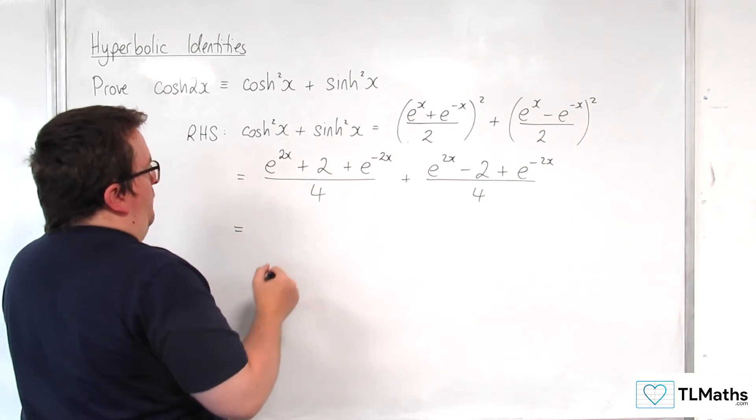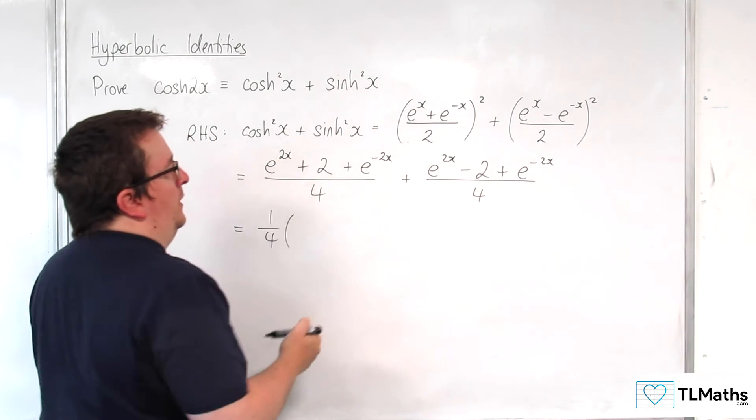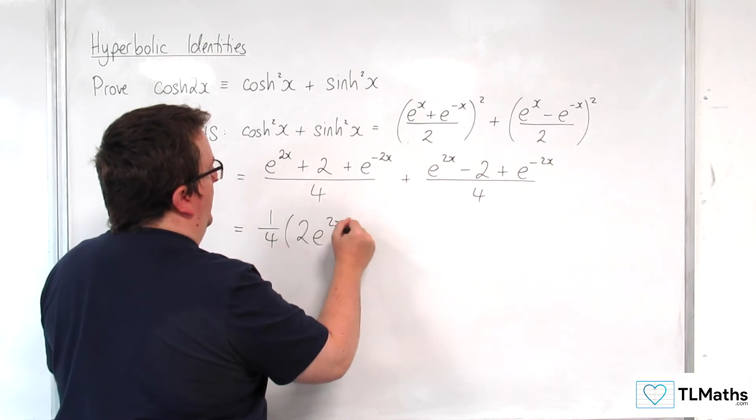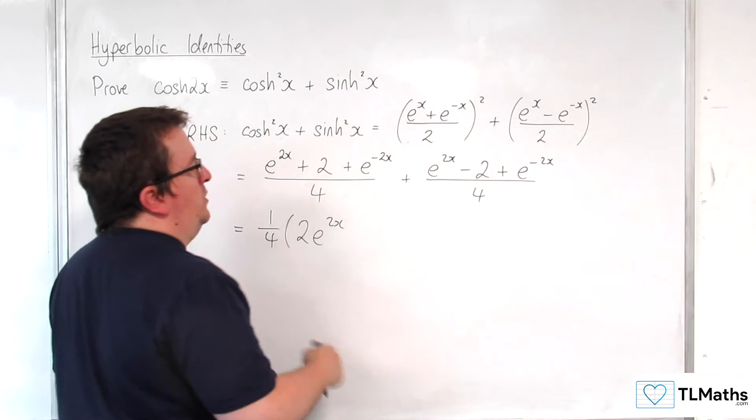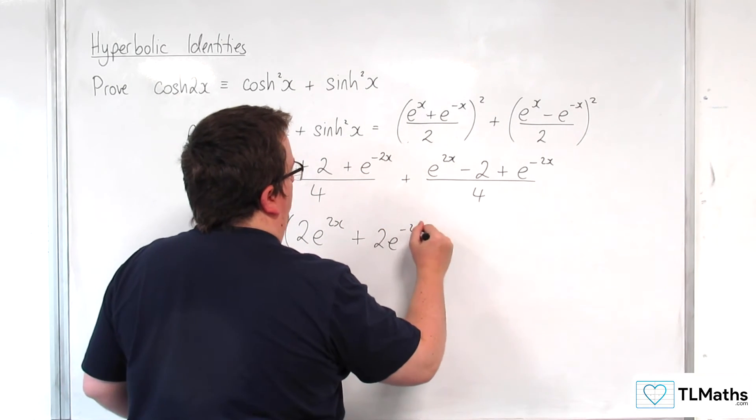So we've got one quarter of e to the 2x plus e to the 2x, so 2 e to the 2x. 2 take away 2, they're gone. So plus 2 e to the minus 2x.